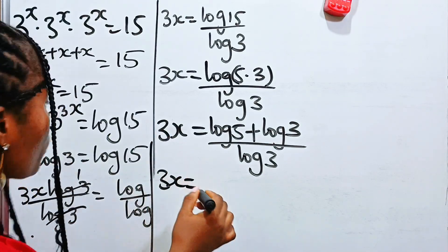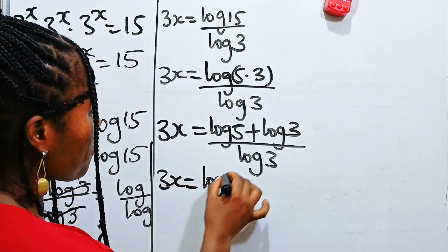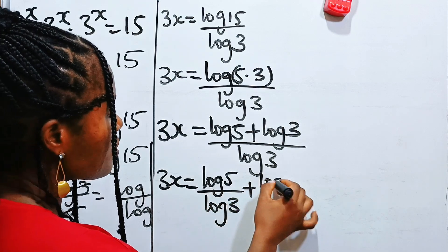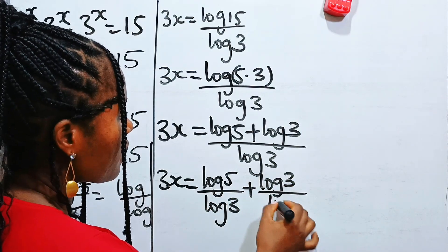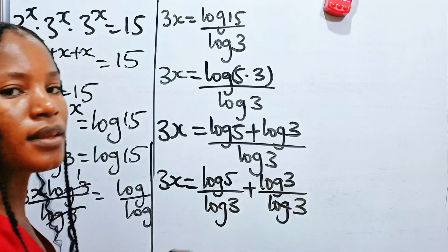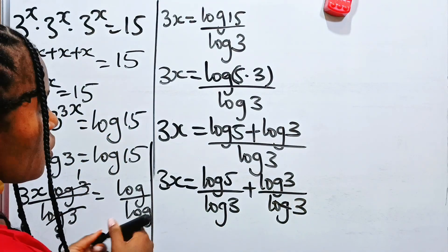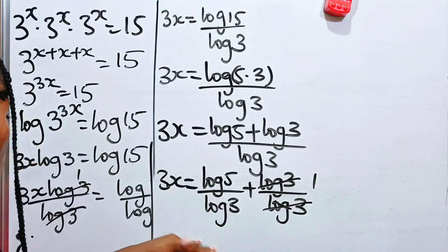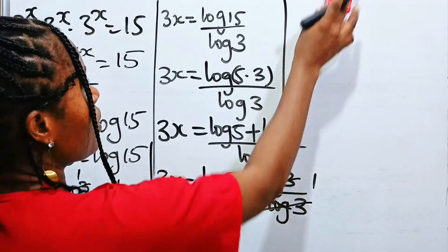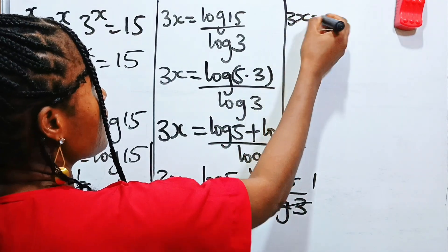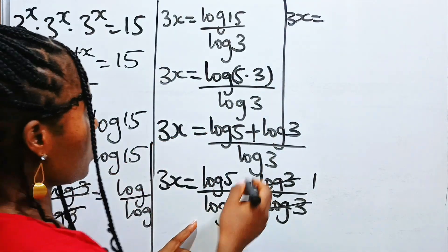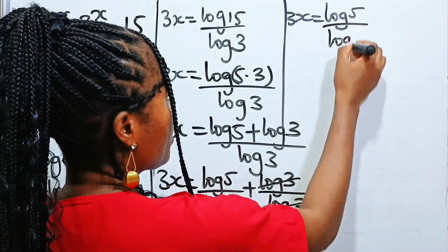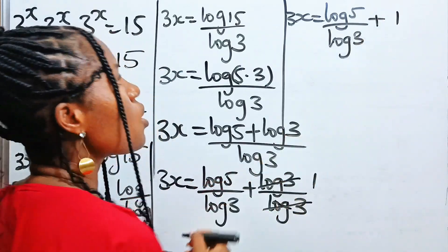So we have 3x equal to log 5 divided by log 3 plus log 3 divided by log 3. Now log 3 divides itself and we have 1. So what we have now is 3x is equal to log 5 divided by log 3 plus 1.